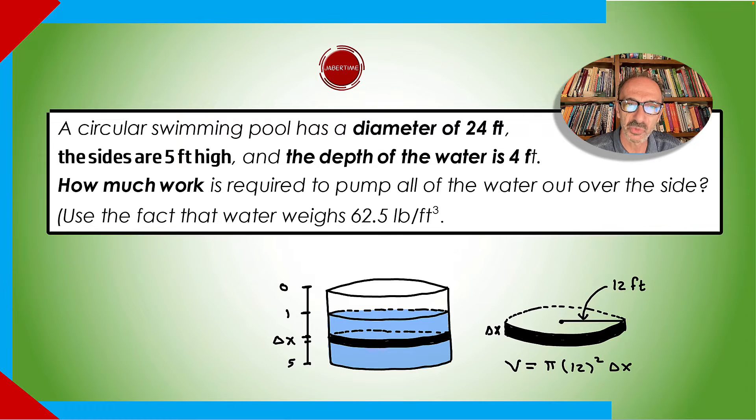Today we're going to go over a circular swimming pool that has a diameter of 24 feet. The sides are 5 feet high and the depth of the water is 4 feet. How much work is required to pump all of the water out over the side? We're going to be using the fact that water weighs 62.5 pounds per cubic foot.